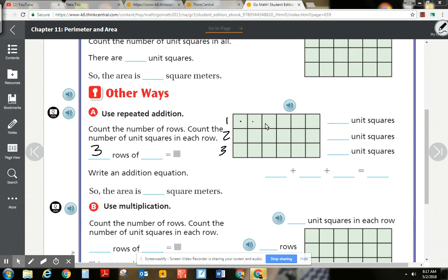So how many are in each row? There's 1, 2, 3, 4, 5, 6. Three rows of six. So there's six unit squares here. There's six unit squares in that second row. In this third row, there's six unit squares also.